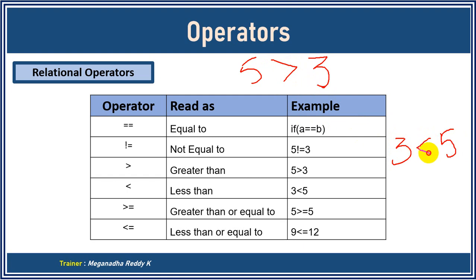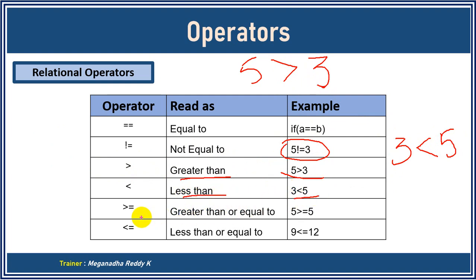So you would write three less than five. Similarly, you can say whether two values are equal or not using not equal. We also have: greater than, less than, greater than or equal to — for example, five greater than or equal to three.